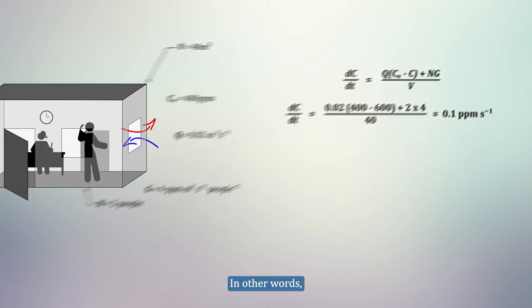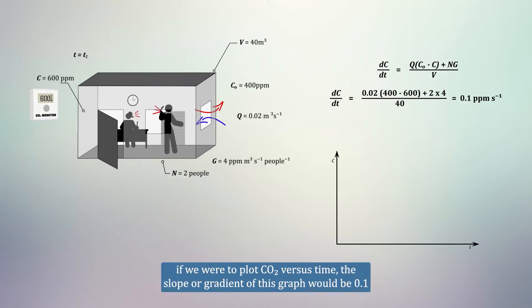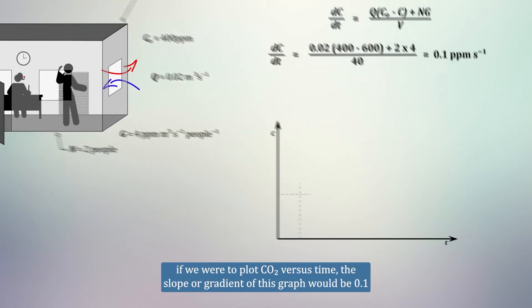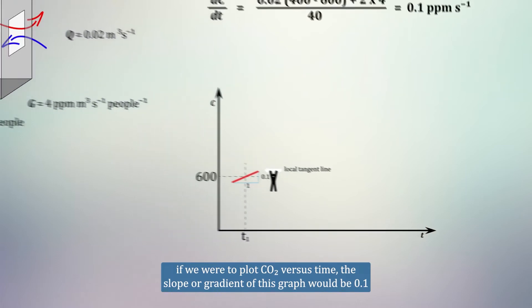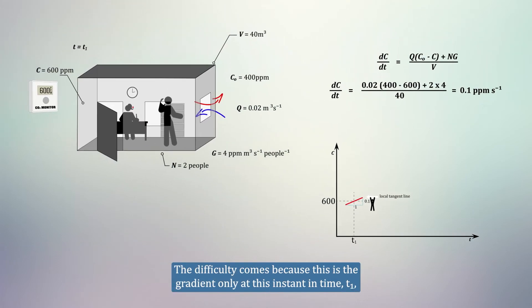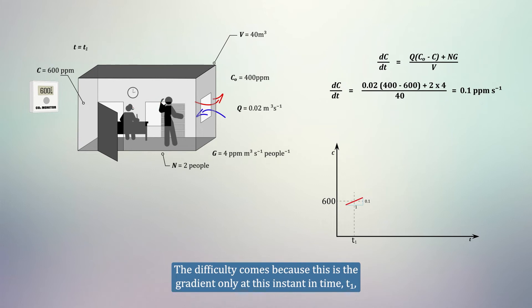In other words, if we were to plot CO2 versus time, the slope, or gradient, of this graph would be 0.1. The difficulty comes because this is the gradient only at this instant in time, T1.